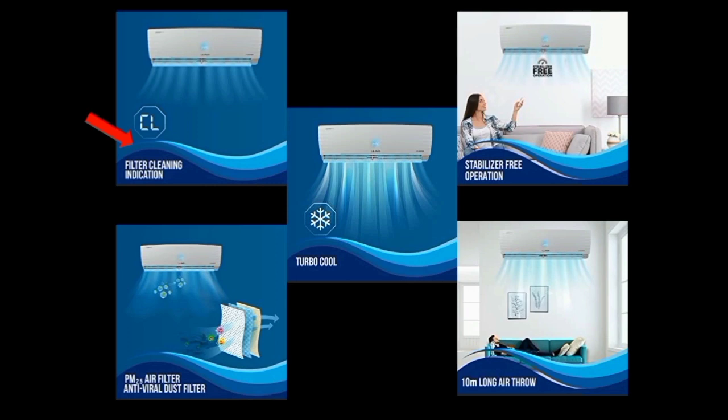The AC also has a turbo mode which gives faster cooling. Additionally, it has a stabilizer-free operation feature. If there are power fluctuations, you don't need a separate stabilizer — the AC can handle the fluctuations on its own, protecting the product from damage.